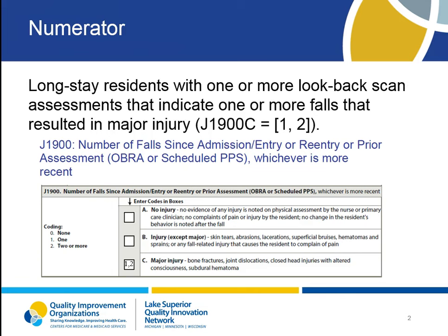The numerator for this measure is the number of long-stay residents with one or more look-back scan assessments that indicate one or more falls that resulted in major injury, so J1900C would be scored as a 1 or 2 on the MDS. As you can see on this slide, a major injury for the MDS is defined as one that has resulted in bone fractures, joint dislocations, closed head injuries with altered consciousness, and/or a subdural hematoma.